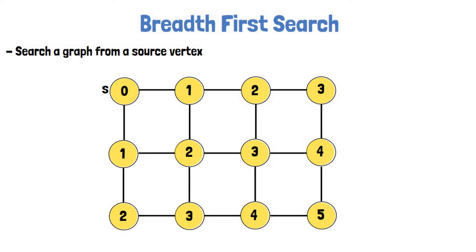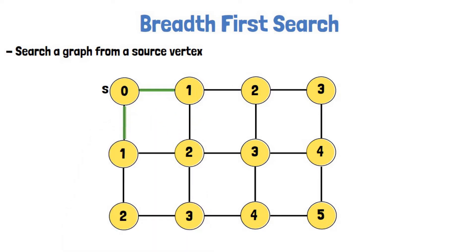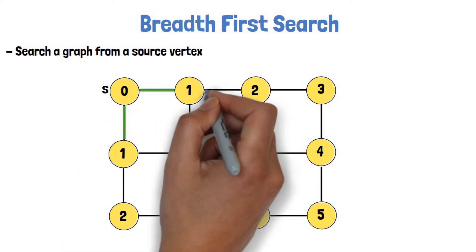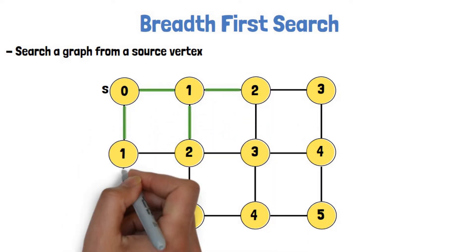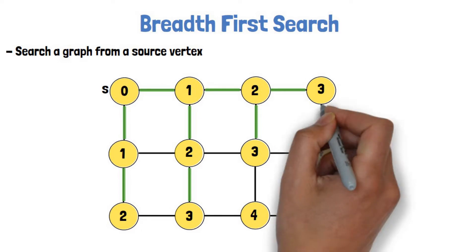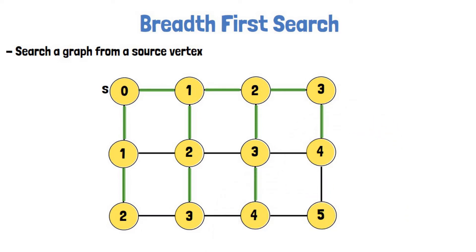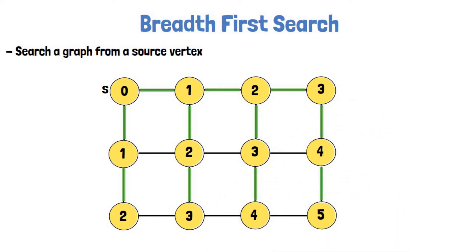Not only that, BFS also outputs the shortest path from S to all other vertices, which together provide a tree where S is the root and each path on the tree from S to any vertex is the shortest path between S and that vertex on the original graph. Quite amazing!